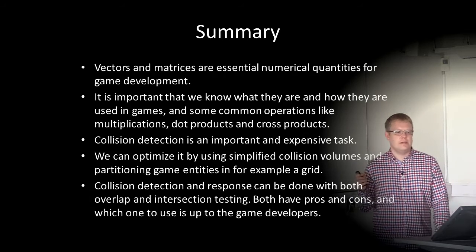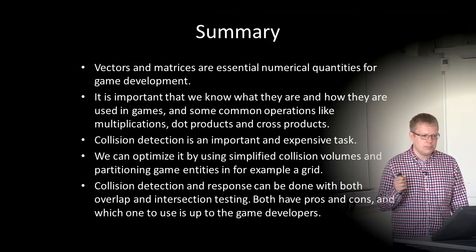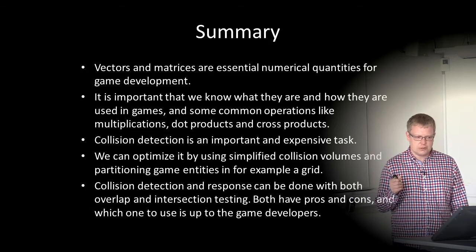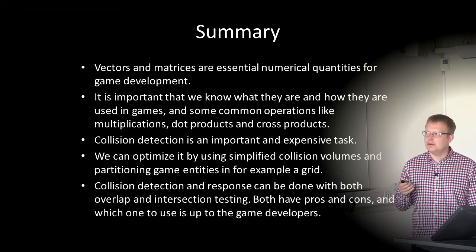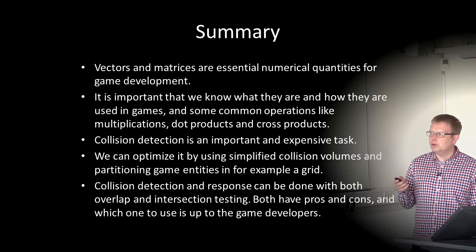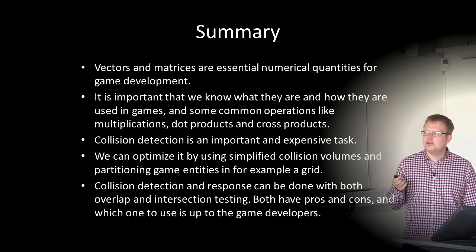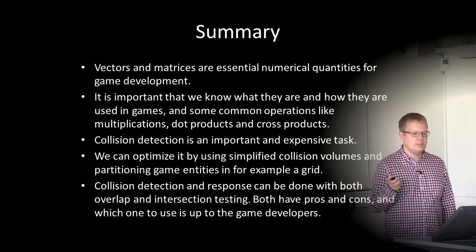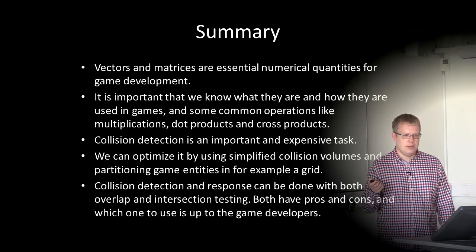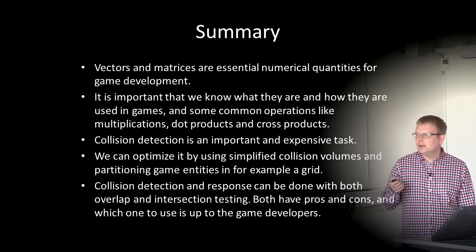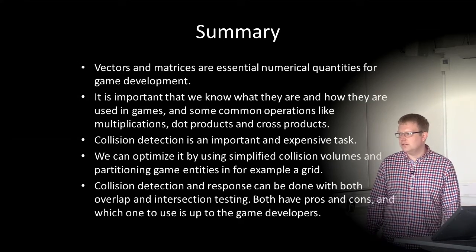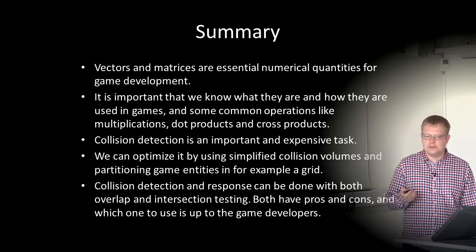To summarize: vectors and matrices are essential numerical quantities in game development, and it's important to know operations like multiplication, dot products, and cross products. Collision detection is an important and expensive task that can be optimized using simplified collision volumes and space partitioning. Both overlap and intersection testing have pros and cons, and the choice depends on the game developer's needs. That's all for this third lecture in course 1DV437, Introduction to Game Programming. My name is Johan Hagenbeck — thanks for listening.